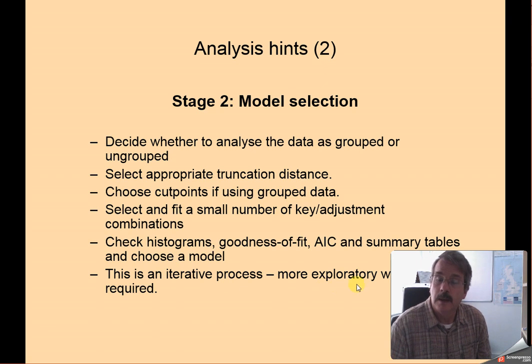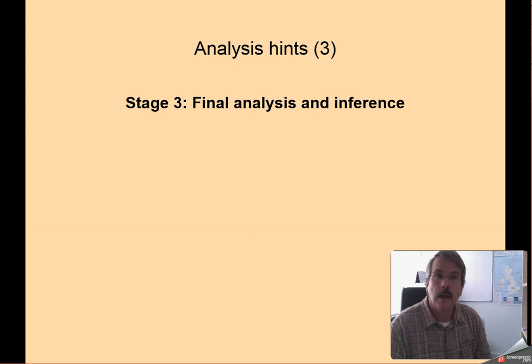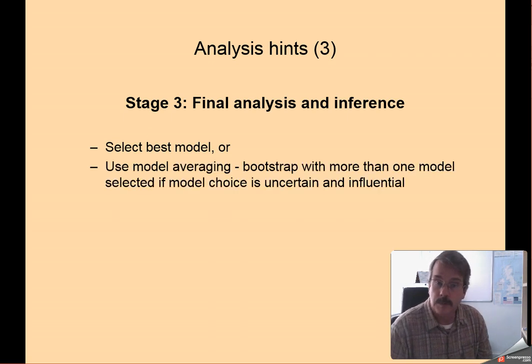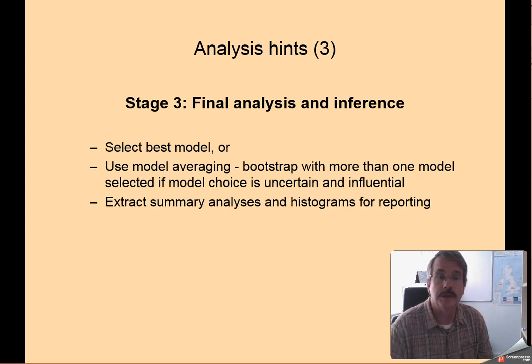Now, you may make a decision about the most appropriate model and then do some more exploration and come to a conclusion that your original choice of model may not have been appropriate. So it may be an iterative process. After you've settled on a model for your data, you now are ready to complete your final analysis stage in which you've selected the model that's most appropriate or you've used model averaging techniques. If you've selected the model for your data, please ask me later. I can talk to you more about what model averaging means. From that final model, extract all of the summary tables and figures that you want to include in your manuscript or your management report. And that is how to make distance sampling work based on the assumptions.